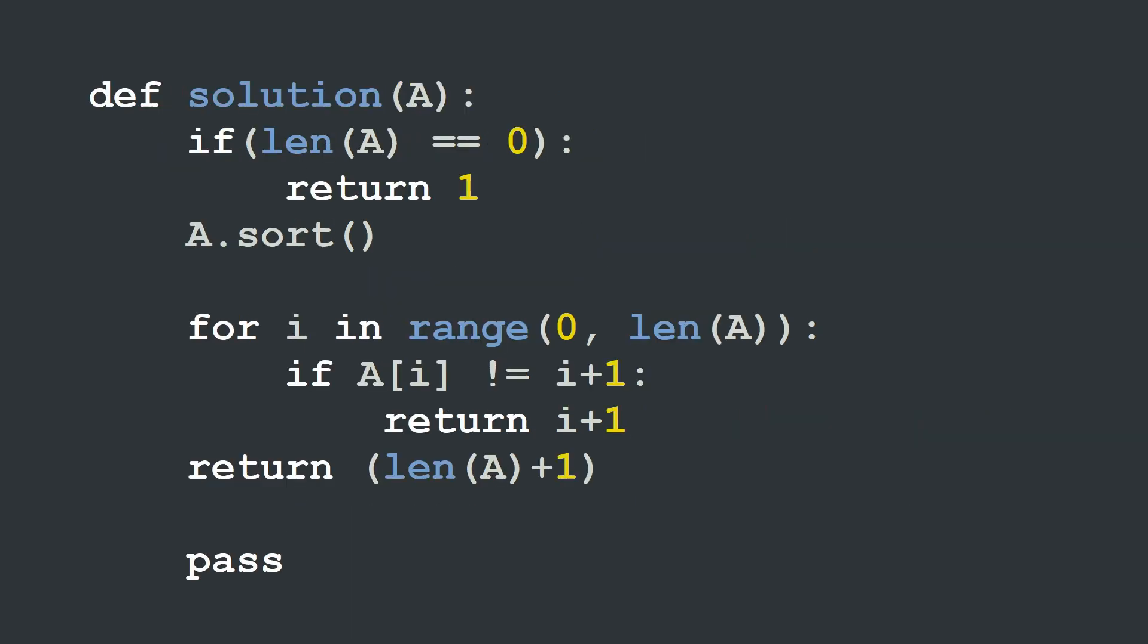The solution looks the same also in Python. We have our solution function, it takes a parameter array A - this one must be a list in this case. And I will start by testing if this list is empty. If the length of A is equal to 0, I will return 1 as my first edge case.